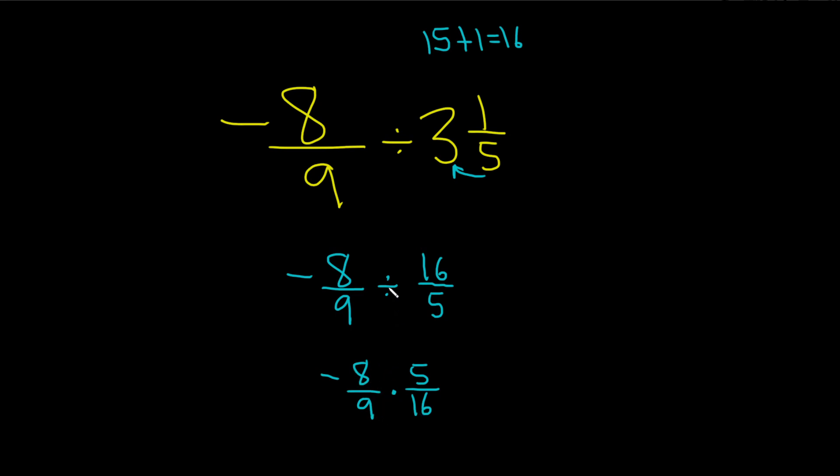But the 8 and the 16 do have some cancellation. 8 goes into both of these numbers evenly. So 8 goes into 8 one time, so we cross it out and put a 1. And 8 goes into 16 two times, so we cross it out and put a 2.